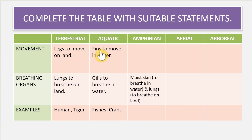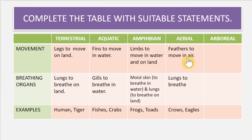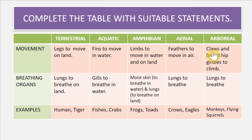For terrestrial animals: breathing organ — lungs; examples — humans and tigers. For aquatic animals: movement — fins; breathing — gills; examples — fish and crabs. For amphibians: movement — limbs; breathing — moist skin and lungs; examples — frogs and toads. For aerial animals: movement — feathers; breathing — lungs; examples — crows and eagles. For arboreal animals: movement — claws and broad hip girdles; breathing — lungs; examples — monkeys and flying squirrels.